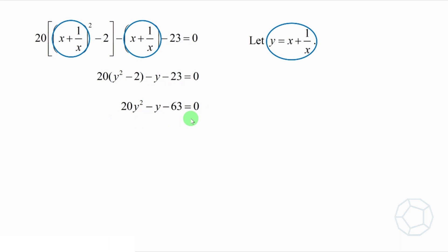This is just a quadratic equation in y, and we can factorize it by cross method. Therefore, 4y plus 7 times 5y minus 9 is equal to 0. So each term in the bracket is 0. We put back y equals to x plus 1 over x to solve the two equations like this.